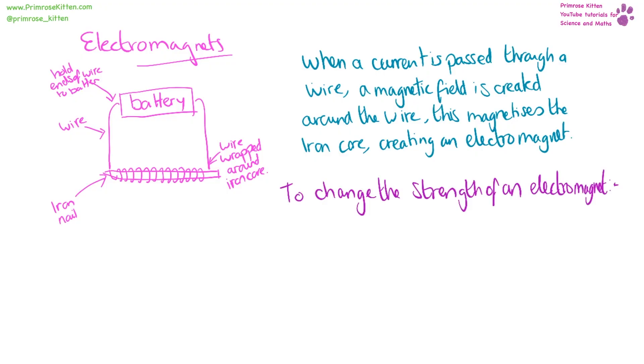If you want to change the strength of an electromagnet, you can do two things. You can change the current, or you can change the number of turns or the number of coils that the wire is wrapped around the iron core.